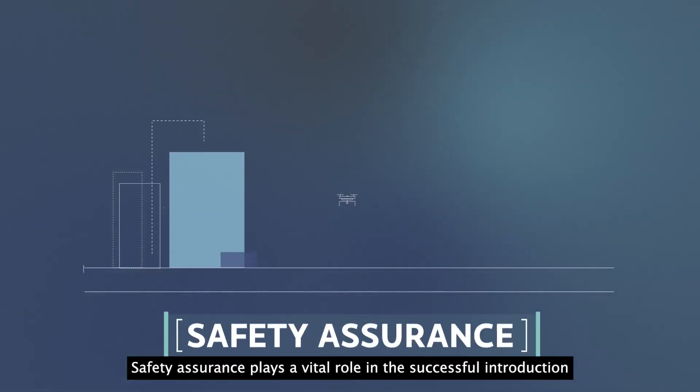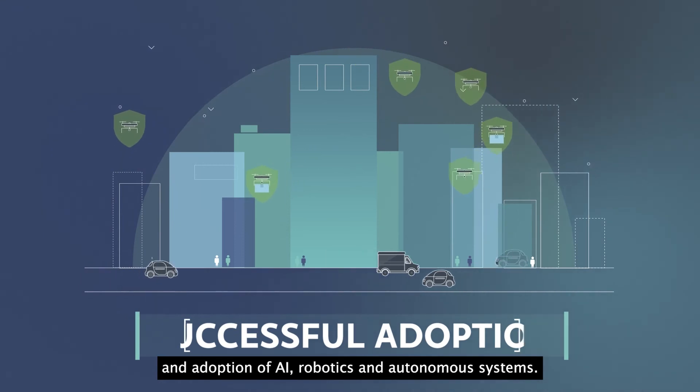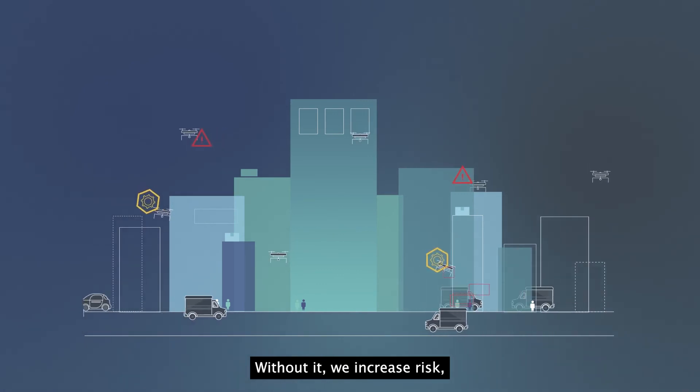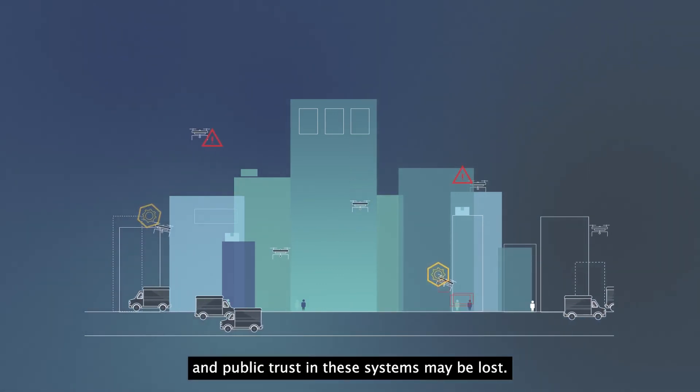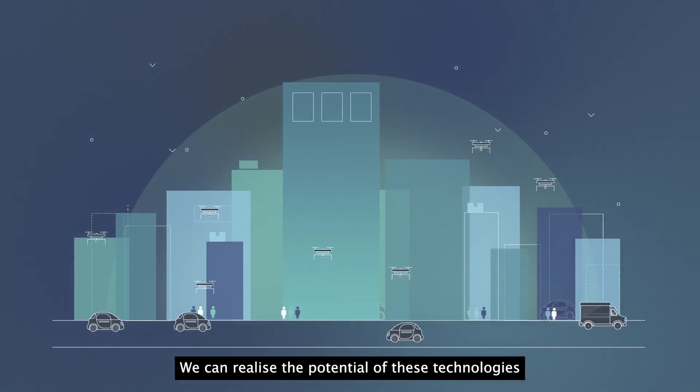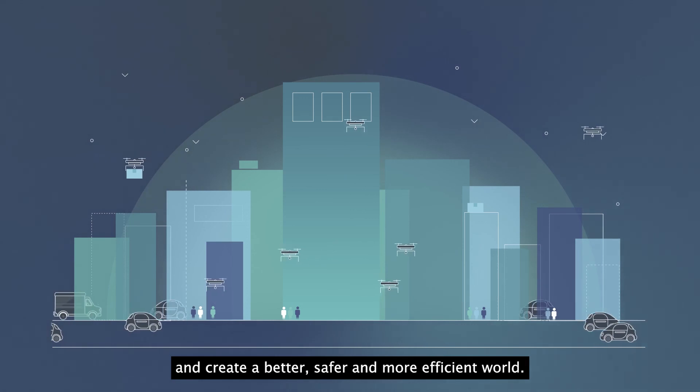Safety assurance plays a vital role in the successful introduction and adoption of AI, robotics and autonomous systems. Without it, we increase risk and public trust in these systems may be lost. But with it, we can realize the potential of these technologies and create a better, safer and more efficient world.